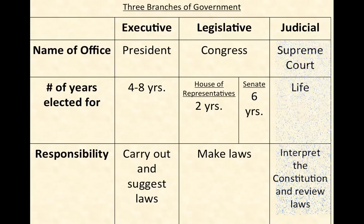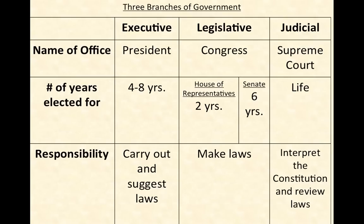Finally, we have the judicial branch, which is made up of the Supreme Court and all of the judges. Supreme Court judges can be on the bench for life, though they may retire if they choose. They are recommended by the president and then appointed by Congress. The responsibility of the Supreme Court is to interpret the Constitution and review laws.